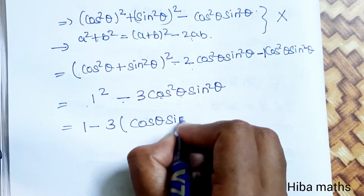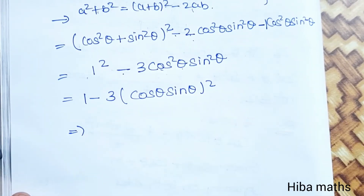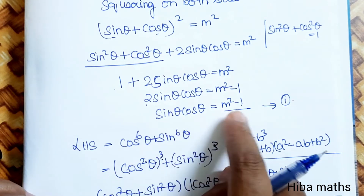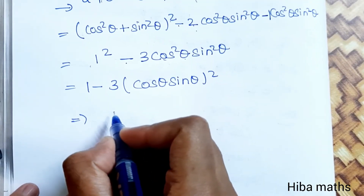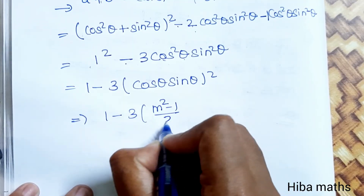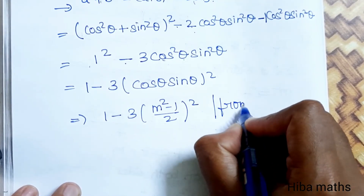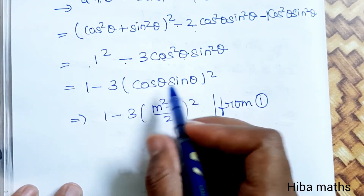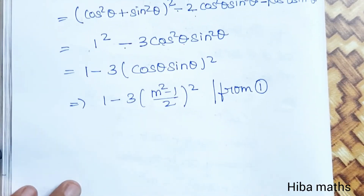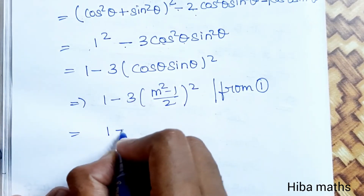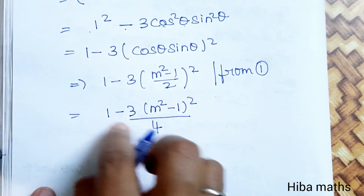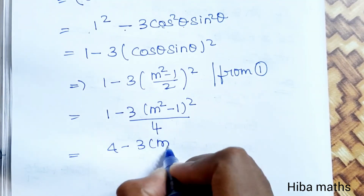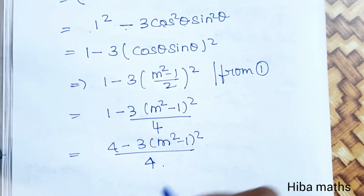Now substituting sin θ cos θ = (m² - 1)/2: 1 - 3 × ((m² - 1)/2)² = 1 - 3(m² - 1)²/4. Taking LCM: (4 - 3(m² - 1)²) / 4, which equals the RHS. Hence proved that cos⁶θ + sin⁶θ = (4 - 3(m² - 1)²) / 4.